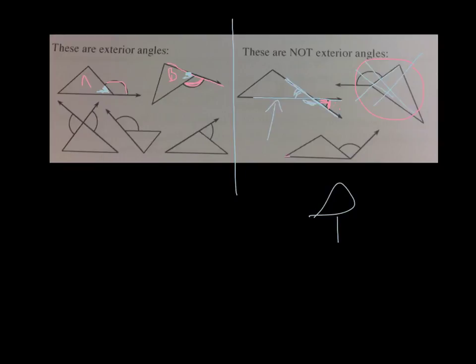And then on this final example, we see that we didn't extend the side in a straight line, so that's not an exterior angle. So these are the ones that we're talking about when we're talking about exterior angles.